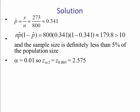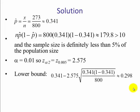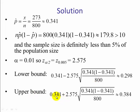And again, this can be found at the bottom of table 5. Our lower bound is our point estimate minus our margin of error. And again, the margin of error is the z-score times the standard error. The upper bound is the point estimate plus the margin of error. And we see that the lower bound is 0.298 and the upper bound is 0.384.